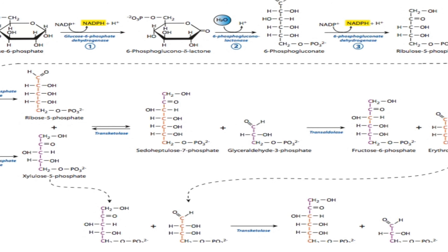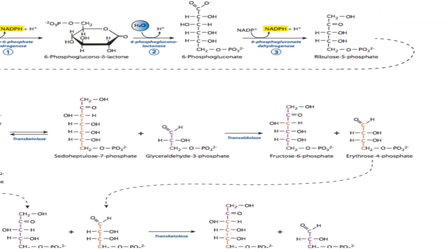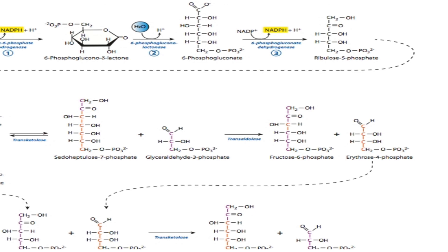So in this way, these are the important steps in the pentose phosphate pathway. I think you can get it, because this is very important for the further secondary metabolite pathway. After this we will see the shikimic acid pathway — how erythrose 4-phosphate enters the shikimic acid pathway and the production of different secondary metabolites. Thank you, keep learning and keep watching.